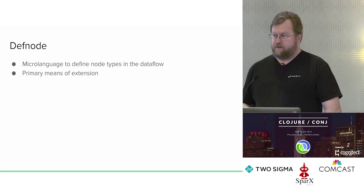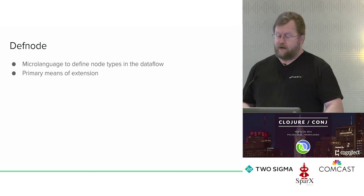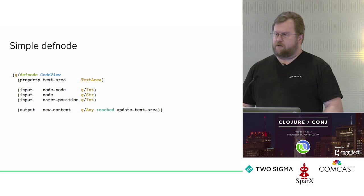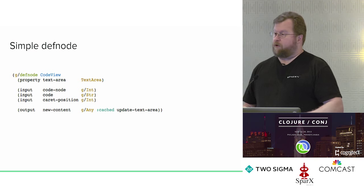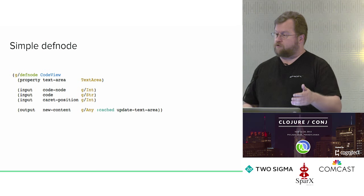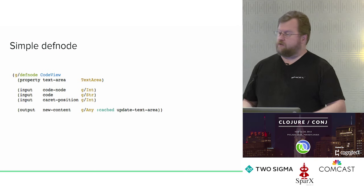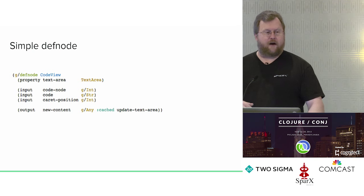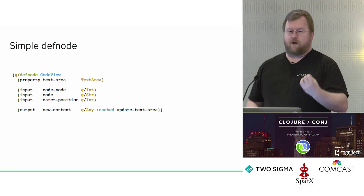To make defining nodes easier for end users — the game developers using this IDE — we defined a language for defining the nodes. This is what we expect to be the main means of extension. There are currently 78 different node types in the editor; most represent game assets or fragments of game assets, but some also represent UI components. Here is one example of a 'defnode' — for editing a Lua script, we create a node to represent that text editing area. One property on this node is actually a text area — the type is a Java class, instantiated and held at that property.